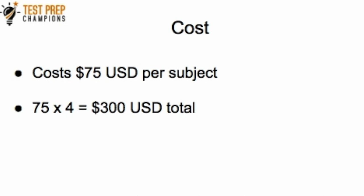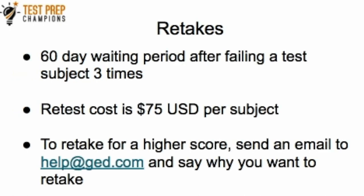With retakes, it can get even more expensive. The waiting period after failing a test subject three times is 60 days. You can schedule your first three tests without any waiting period — say you fail on your first try, second try, third try — but after failing a test subject three times, you're going to have a 60-day waiting period before you can retest. The cost for a retest is $75, so you do want to make sure that you're ready to go the first time to save that money.